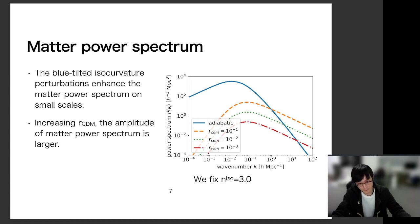induced matter power spectrum. So in this plot, the isocurvature spectral index is fixed to 3.0. So this is a very blue tilted spectrum. And so the matter power spectrum is significantly amplified on small scales.